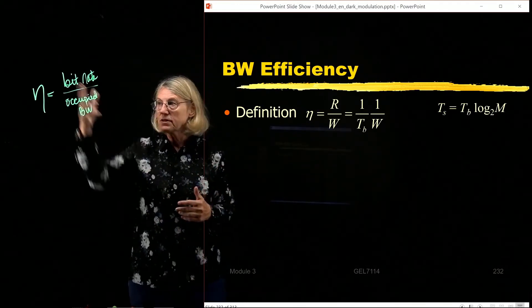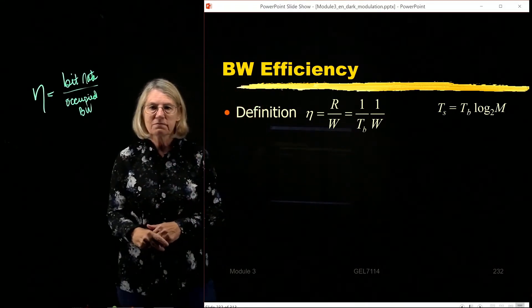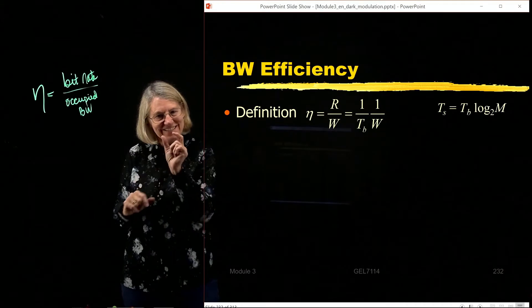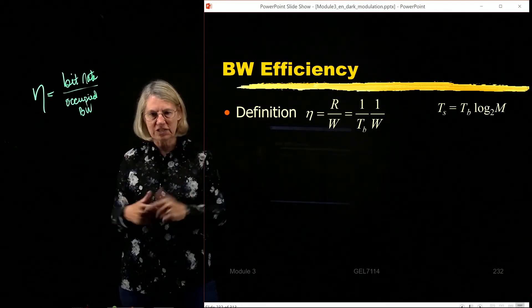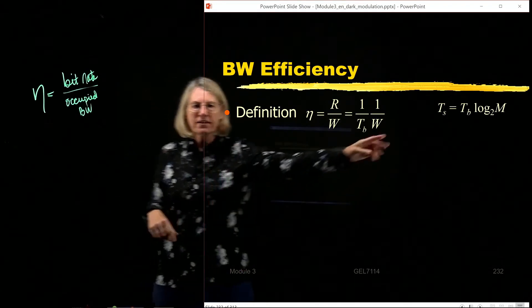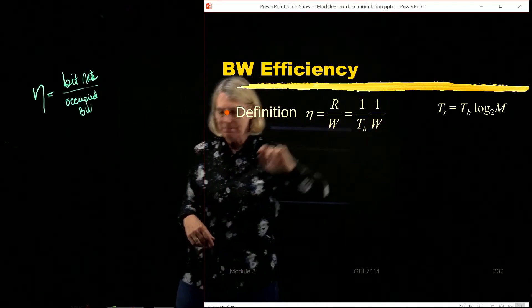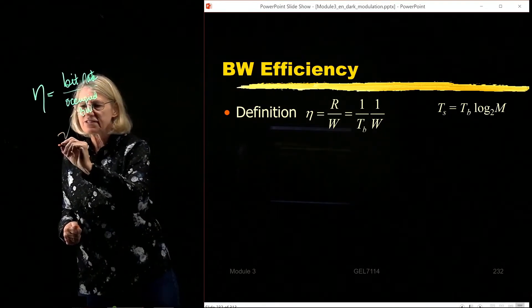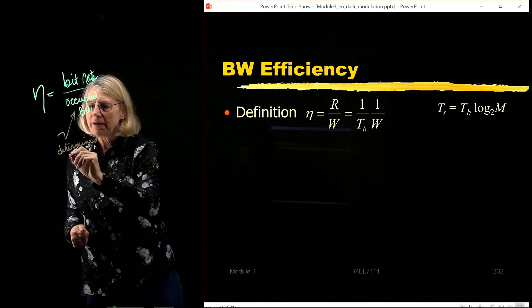So bit rate, what does bit rate mean? Well, that's one over the bit interval, sorry. So TB is the interval of time for one bit. One over TB is how many bits per second. Often, I'm going to want to go back and forth between symbol time and bit time.